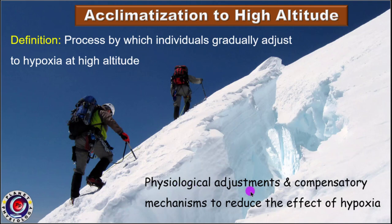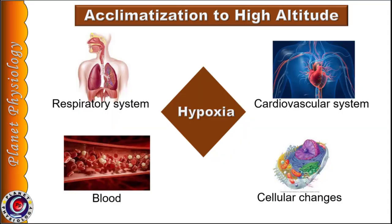Acclimatization involves physiological adjustments and compensatory mechanisms to reduce the effect of hypoxia. The most important changes are seen in the respiratory system, cardiovascular system, blood, and at the cellular level. Renal adjustments also help in the process.